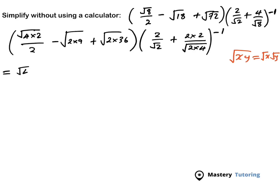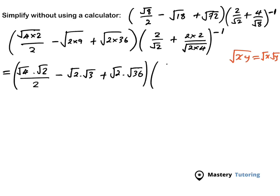So when we apply this, we want to have square root of 4 times square root of 2, over 2, and then it's going to be minus square root of 2 — square root of 2 times square root of 9, plus square root of 2 times square root of 36. And then we have 2 over square root of 2, plus 2 times 2 over square root of 2 times square root of 4, to the power of negative 1.